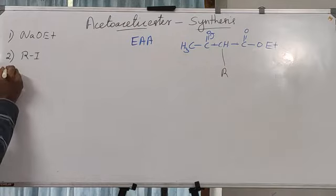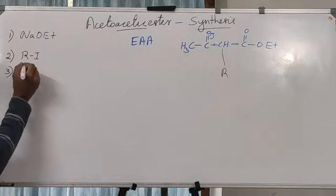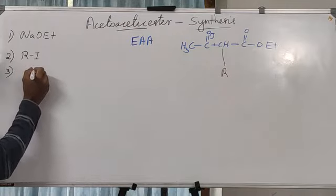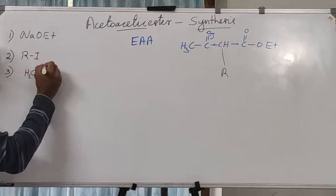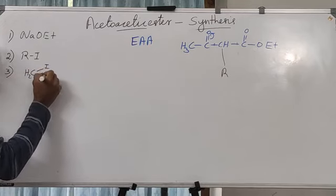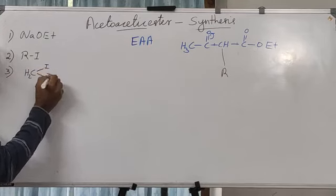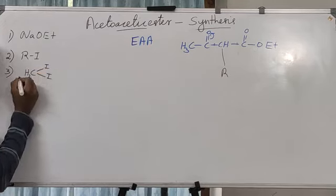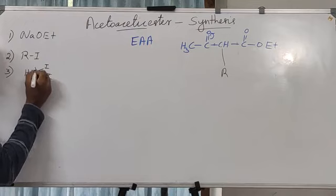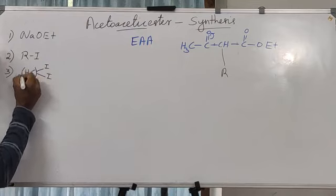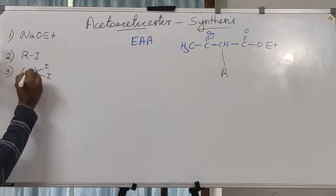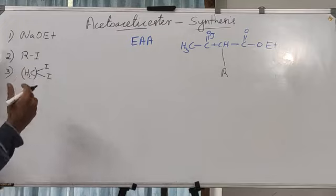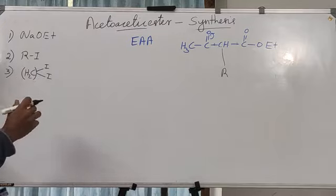Instead of a monohalide, if you use a di-iodide or di-halide such as diiodomethane (CH2I2), the number of bridging CH2 groups can be increased — one, two, or three carbons — to link two molecules.